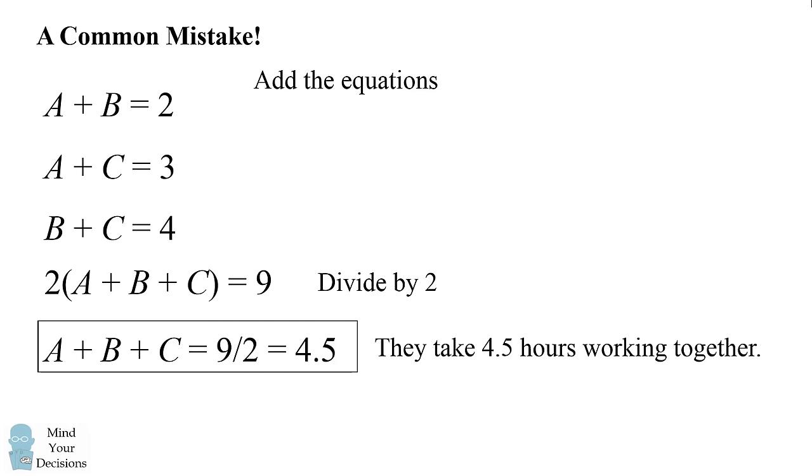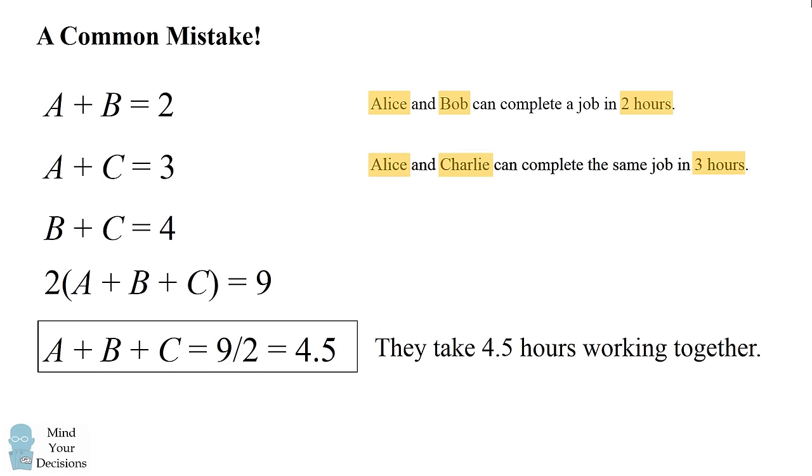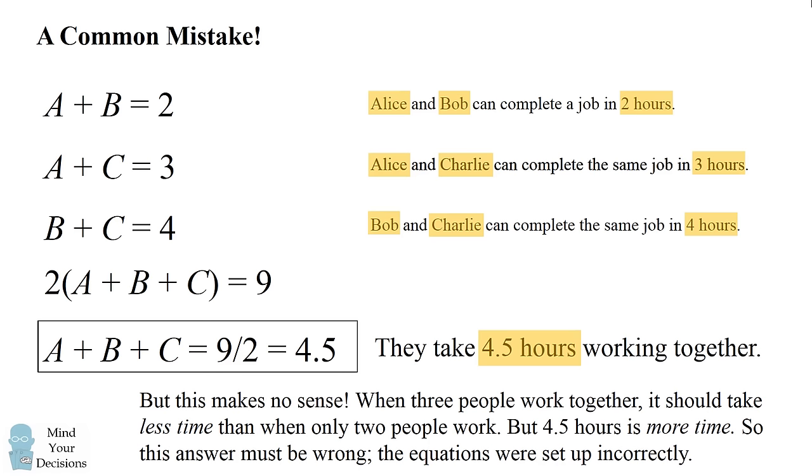But let's think about does this answer make any sense? We know that Alice and Bob take two hours, Alice and Charlie take three hours, and Bob and Charlie take four hours. But somehow when all three are working together, they take four and a half hours? This makes no sense. When three people work together, it should take less time than when only two people work together. But 4.5 hours is more time. So this answer must be wrong.